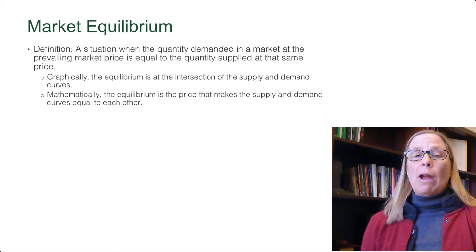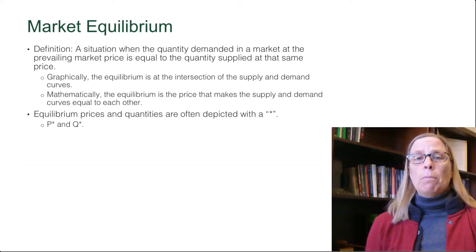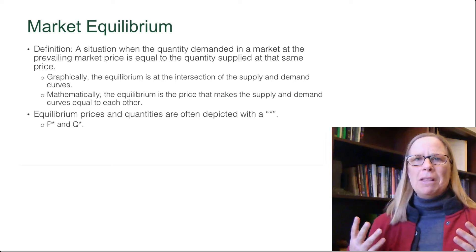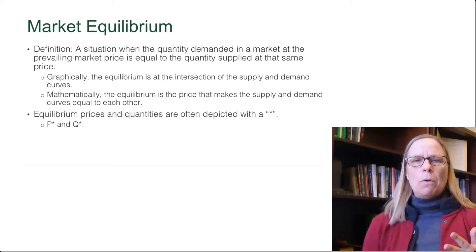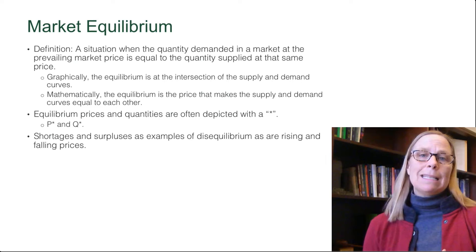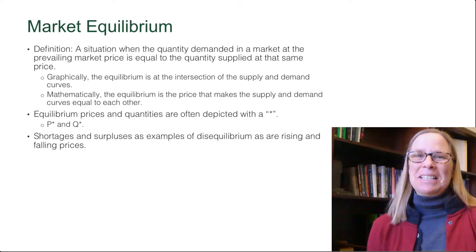When we depict market equilibrium in a graph, I often will use an asterisk. So the market equilibrium price will be P star and market equilibrium quantity will be Q star — the same thing in a mathematical model. That's just to help us recognize what those points are. It's not necessary, and if you look at other textbooks or other classes they may not use that same convention, but that's the convention I'll use in this class.